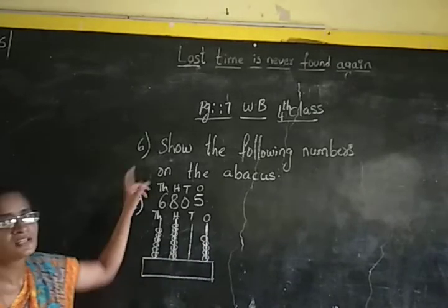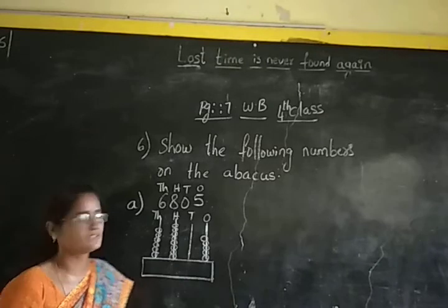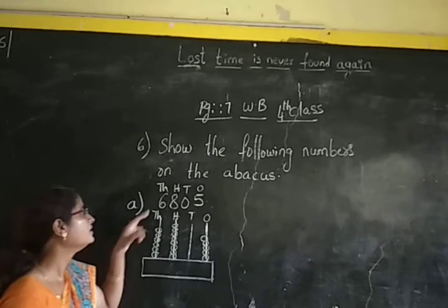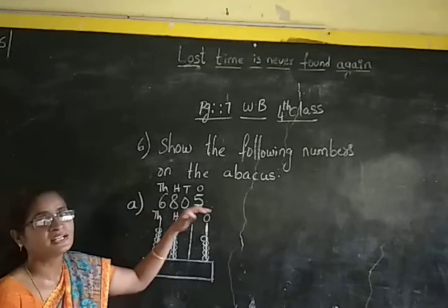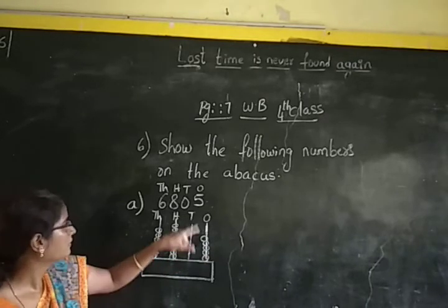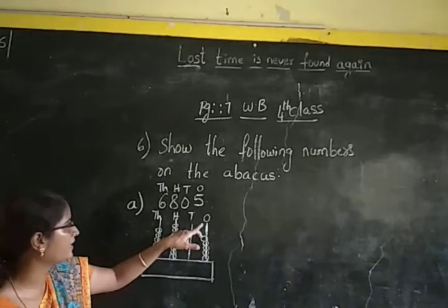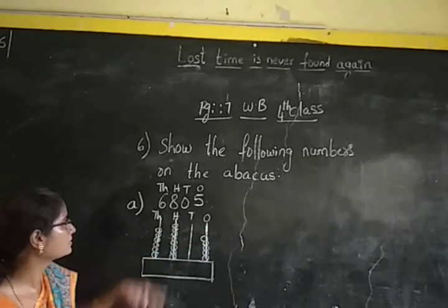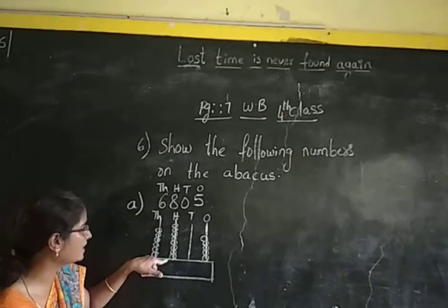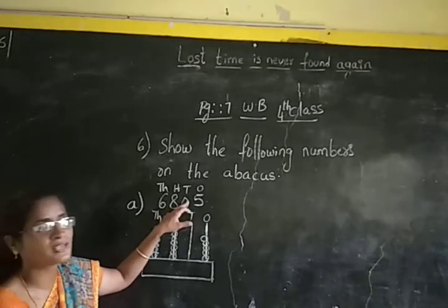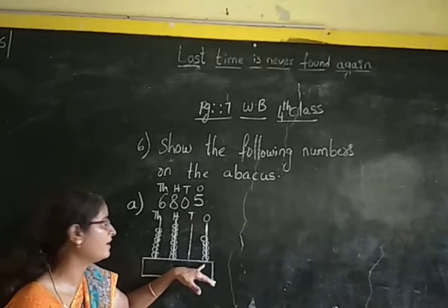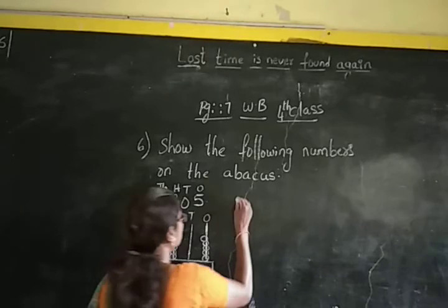Did you understand? The question is to show the given numbers on the abacus. For that, draw the abacus. Here the number is 6805, starting from thousands place, so draw 4 spikes. Name each spike as 1's, 10's, 100's, and 1000's. In thousands place we have 6, so arrange 6 beads. In hundreds place we have 8, so arrange 8 beads. In tens place we have 0, so no beads. In ones place we have 5, so show 5 beads.